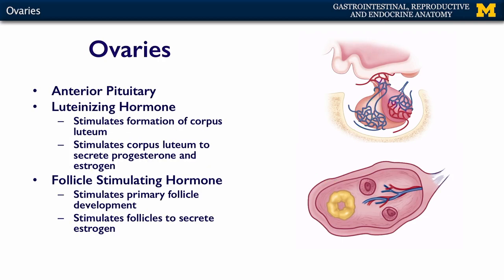Luteinizing hormone stimulates the formation of the corpus luteum — the yellow body — which forms after ovulation. LH also stimulates the corpus luteum to secrete progesterone and estrogen. Follicle-stimulating hormone acts on the ovary to stimulate primary follicle development. The primary follicles secrete estrogen. So in summary: LH stimulates formation and maintenance of the corpus luteum, which secretes progesterone and estrogen; FSH stimulates the primary follicles, which secrete estrogen.